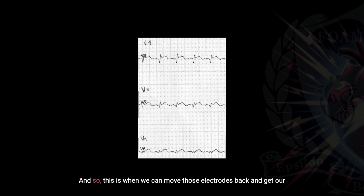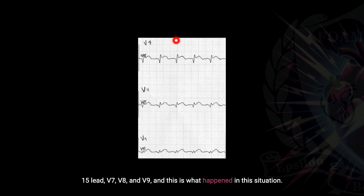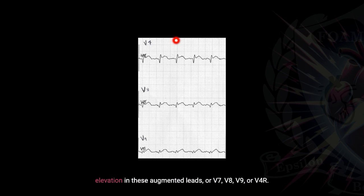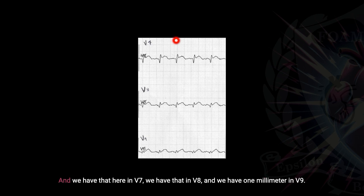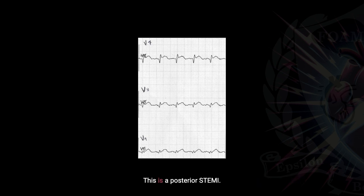This is when we can move those electrodes back and get our 15-lead — V7, V8, and V9. And that's what happened in this situation. All we need is one millimeter of ST-segment elevation in these augmented leads — V7, V8, V9, or V4R. We have that here in V7, in V8, and one millimeter in V9. This is a posterior STEMI.